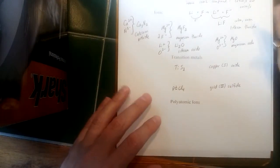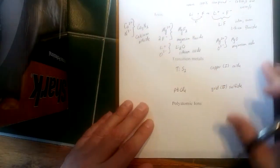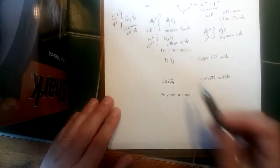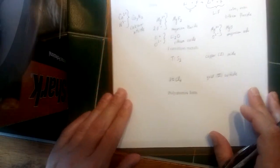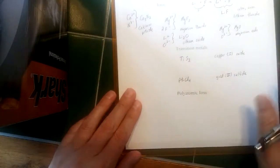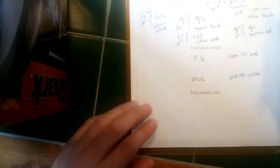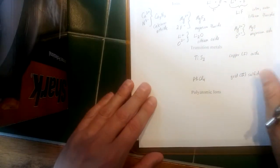Silver, for instance, is always plus one when it's in an ionic compound. So I want to give a couple examples. I added a couple examples that we'll work on to the notes before I started recording.